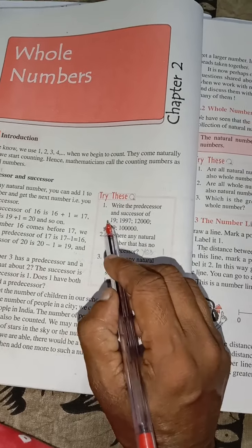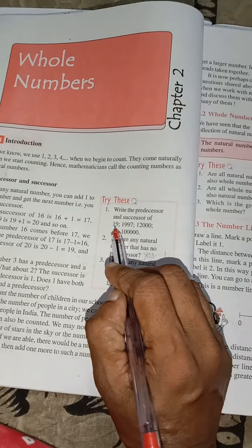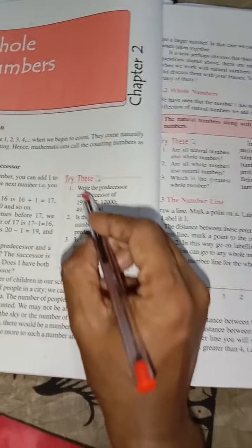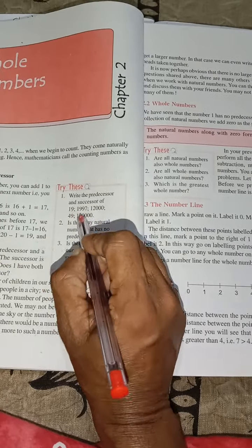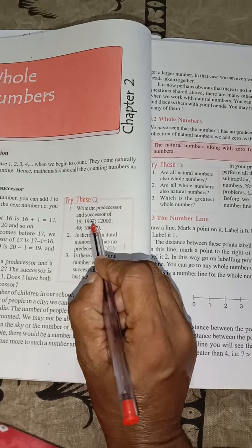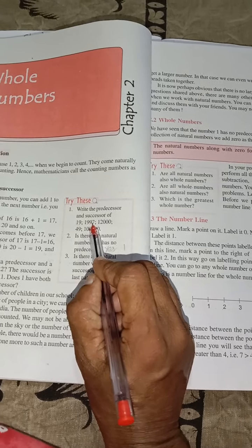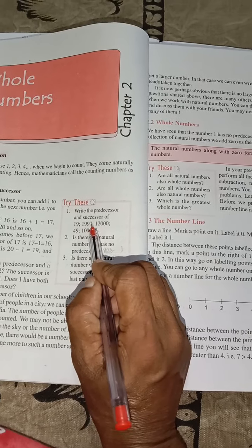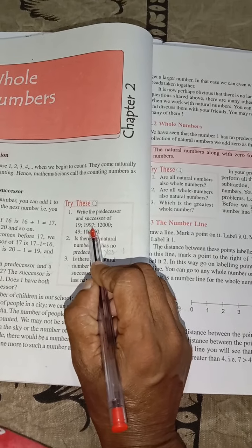Successor means next number. So 19, after is 20. So the predecessor is 18 and the successor is 20. 1997, predecessor is 1996 and successor is 1998.